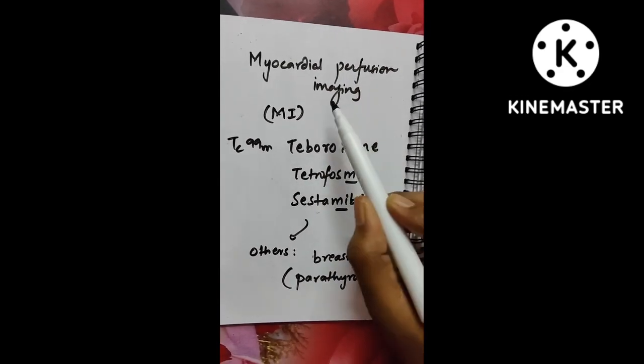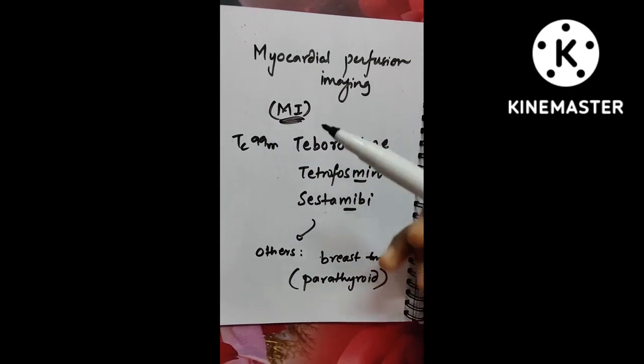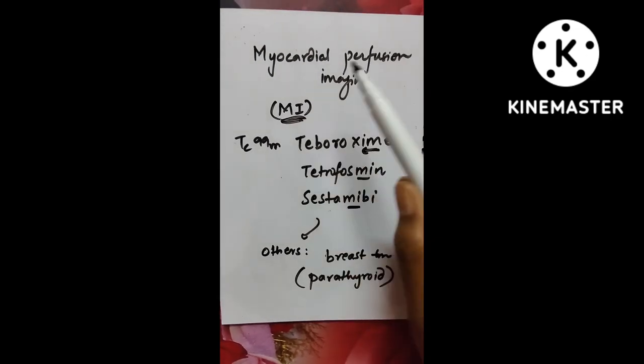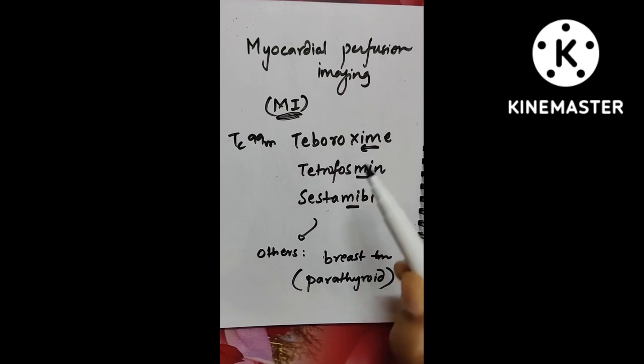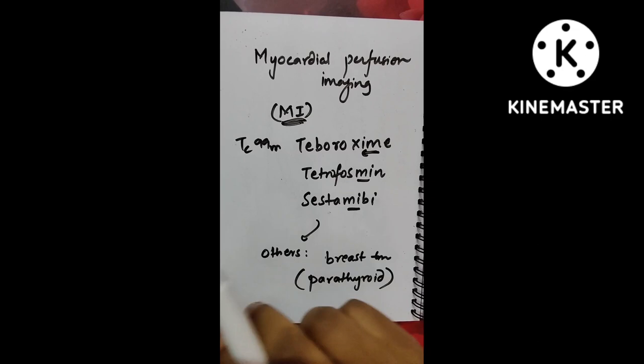This is about myocardial perfusion imaging. So MI, myocardial, when you get MI, we do this imaging to see whether the infarct is there or to which extent it is there. So myocardial infarction imaging MI, right? So the names have MI: Taboroxime MI, Tetrophosmin MI, Sestamibi scan MI. So all MI are there in the name.